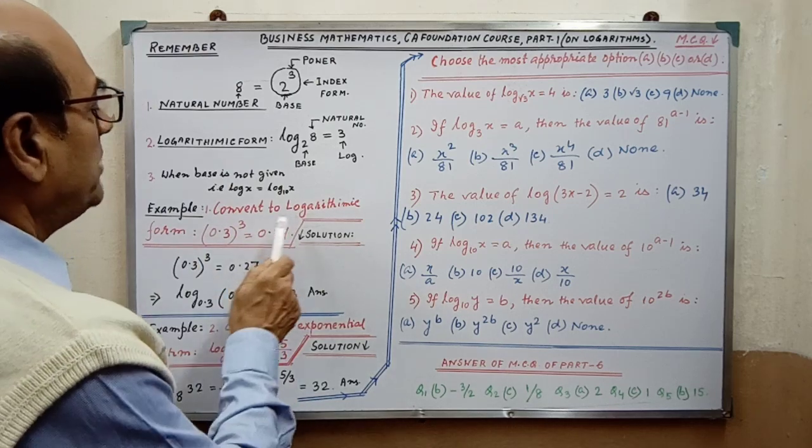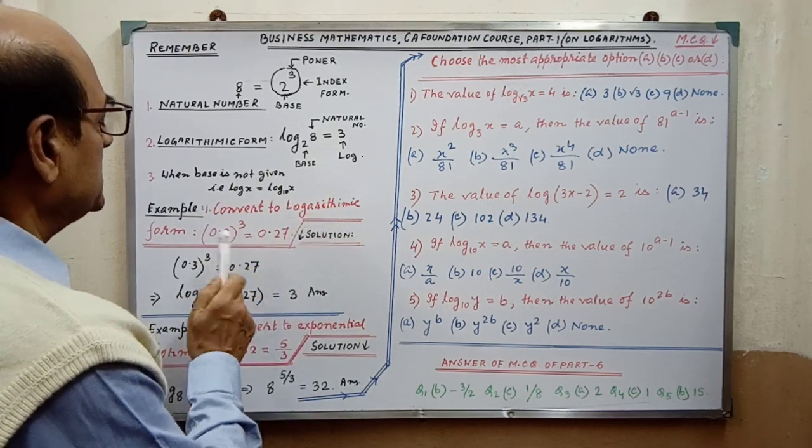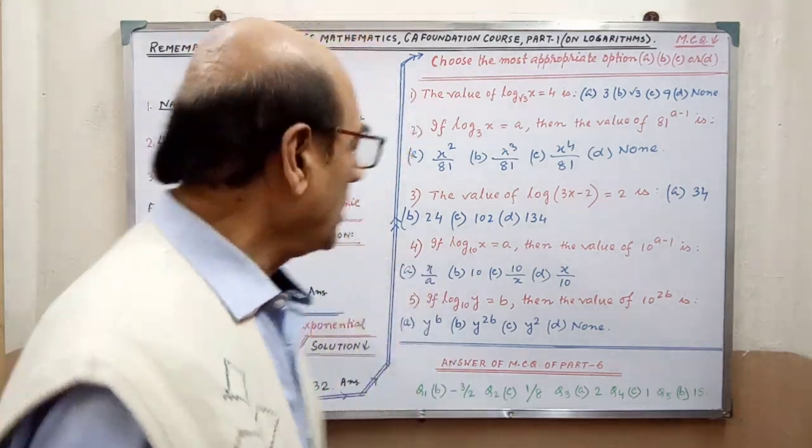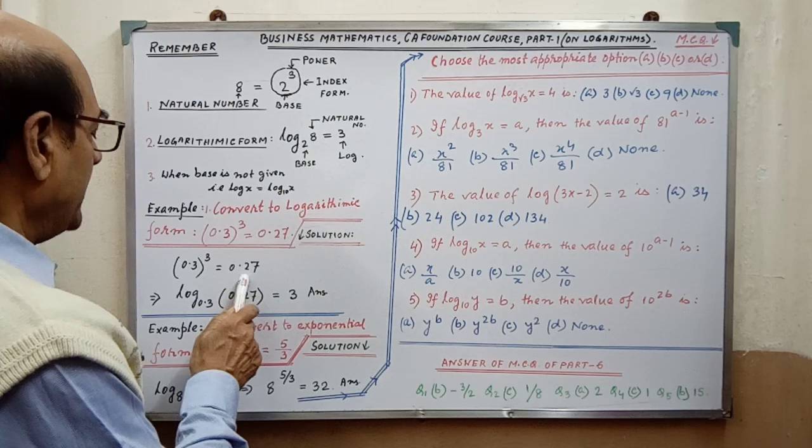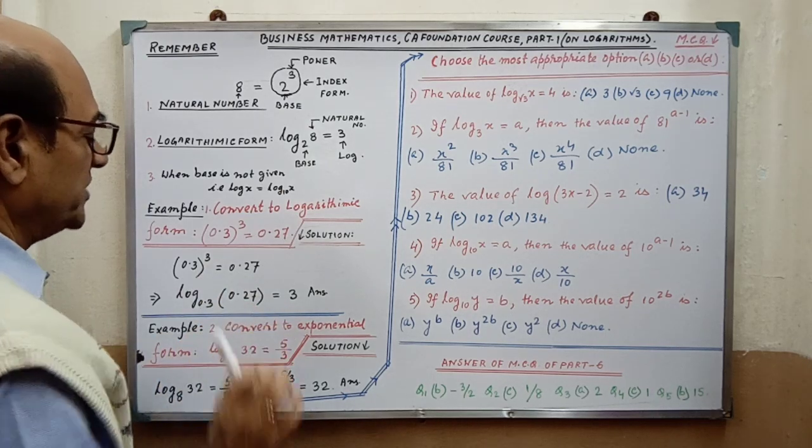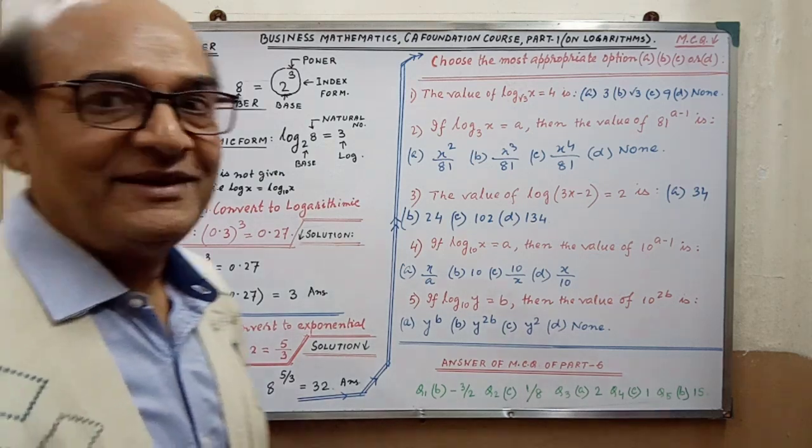Now example: convert to logarithmic form. This is in index form, we have to convert into logarithmic form. So after writing this, the base is this, here base will be the same. This is the number equal to 3. I think clear.